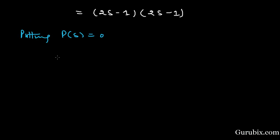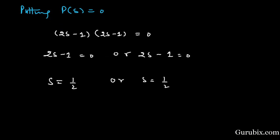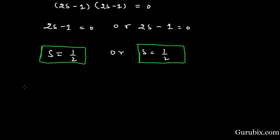Therefore it will be (2s minus 1) into (2s minus 1) equals 0. This means 2s minus 1 equals 0, or 2s minus 1 equals 0. Therefore the zeros of the polynomial are s equals 1/2 or s equals 1/2. So both zeros are the same.